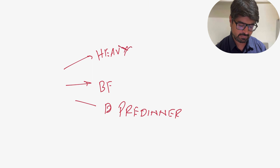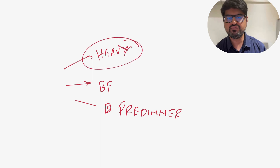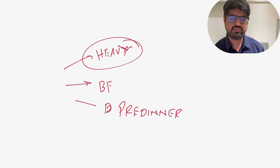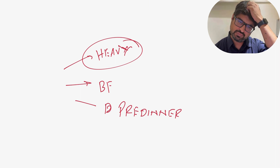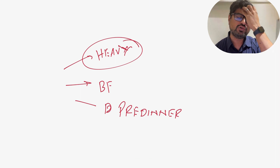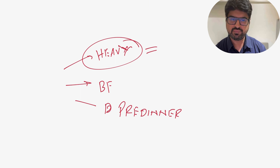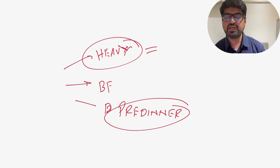If a patient has one particularly heavy meal — for example, a very heavy lunch but lighter other meals — then the major post-meal contribution comes from that meal. In this case, you select the heaviest meal of the day for the bolus injection.